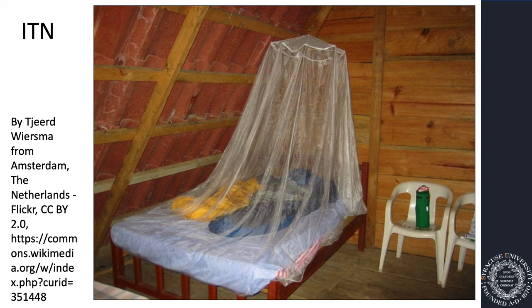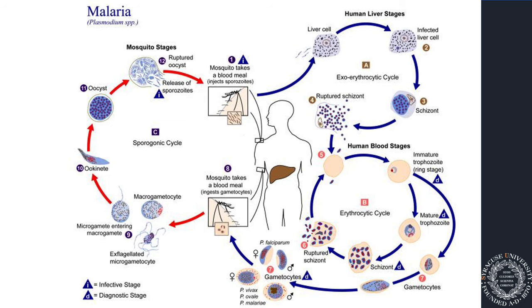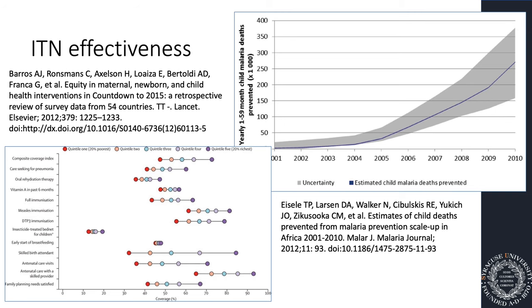I consider the insecticide-treated mosquito net one of the greatest medical discoveries in the last 30 years — and it's such a simple tool. You treat the mosquito net with insecticide, and when a mosquito comes and lands on the net looking for a blood meal, that mosquito dies. Not only are you protecting the person underneath, but if that mosquito has a malaria parasite, you're taking it out of circulation so it cannot transmit malaria to other people. I was on a team that estimated mosquito nets saved a million children's lives from 2001 to 2010.